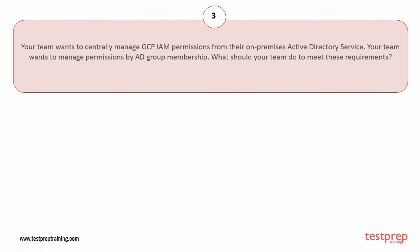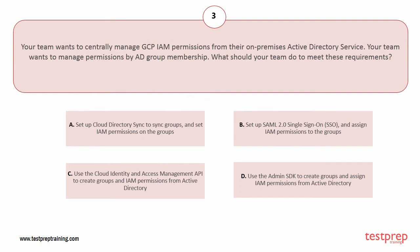Question number three: your team wants to centrally manage GCP IAM permissions from their on-premises Active Directory service, managing permissions by AD group membership. What should your team do? Options: A) set up Cloud Directory Sync to sync groups and set IAM permissions on the groups. B) set up SAML 2.0 single sign-on and assign IAM permissions to the groups. C) use the Cloud Identity and Access Management API to create groups and IAM permissions from Active Directory. D) use the Admin SDK to create groups and assign IAM permissions from Active Directory.